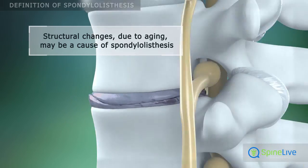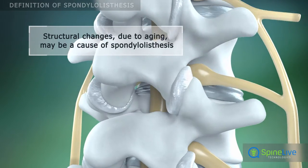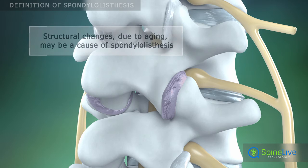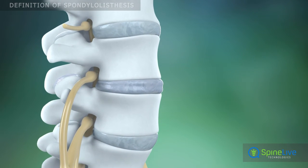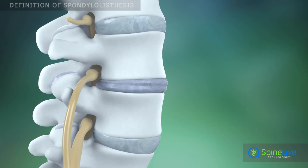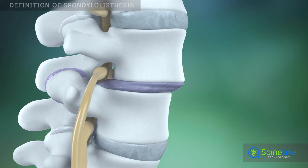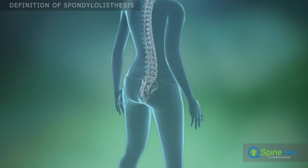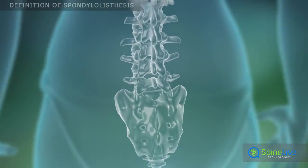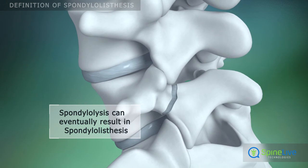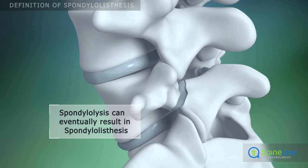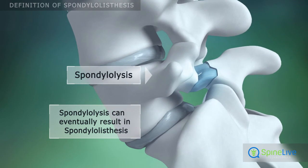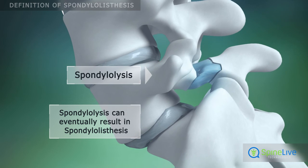Spondylolisthesis may be caused by degeneration, when weakened discs and facet joint capsules allow the vertebra to slip. Often spondylolisthesis develops because of a spondylolysis — a defect or fracture of the vertebra — which can be found in 5% of children.